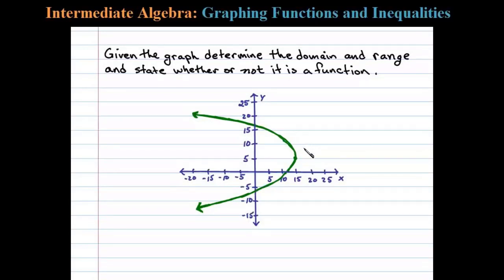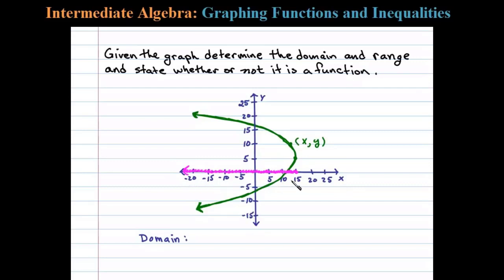Given the graph, determine the domain and range and state whether or not it's a function. Any point on the graph is an ordered pair x comma y, and the domain is defined to be the set of all possible x values. From the graph it appears the maximum x value is 15, and all other x values are less than that. Here I've shaded in the domain on the x-axis.